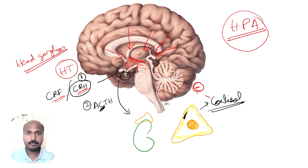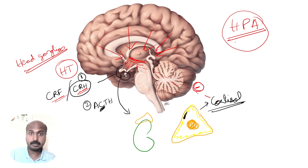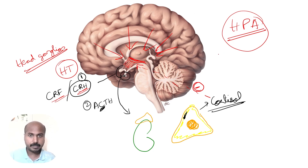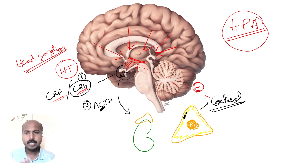The HPA axis is important because it is implicated in many diseases and also in how the body responds to external steroids. Taking excess steroids will suppress the HPA axis, because cortisol negatively suppresses the hypothalamus.